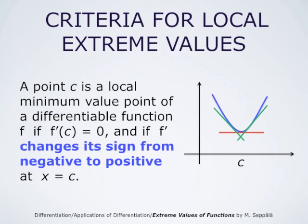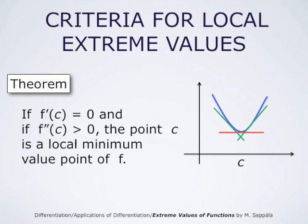At a local minimum value point of a differentiable function f, f' at c is 0, and f' changes its sign from negative to positive as indicated by the picture. This can be summarized: if f' at c is 0 and if the second derivative of f is positive at the point c, then c is a local minimum value point of the function f. This is because if the second derivative is positive at c, it means that near the point c the first derivative is increasing, and therefore changes its sign from negative to positive.